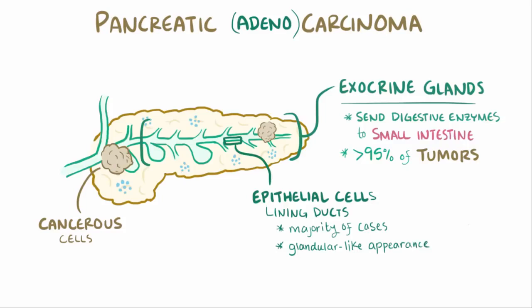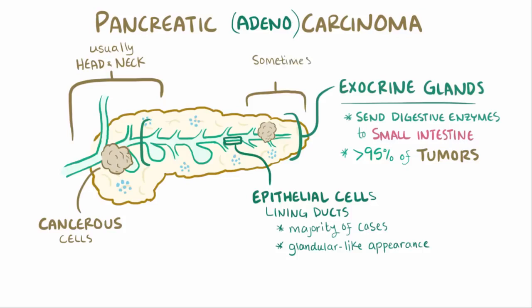Often, pancreatic adenocarcinoma is used interchangeably with pancreatic carcinoma. These tumors typically form in the head or the neck of the pancreas, but in some cases tumors form in the tail.